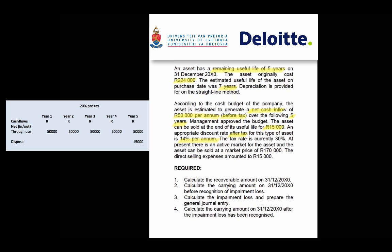An appropriate discount rate after tax for this type of asset is 14%. It's important to consider whether that rate is given before or after tax. A tax rate of 30% is provided. At present there is an active market for the asset, and it can be sold at a market price of 170,000 Rand with selling expenses of 15,000 Rand.